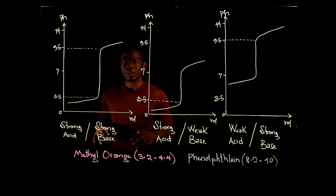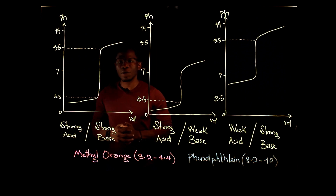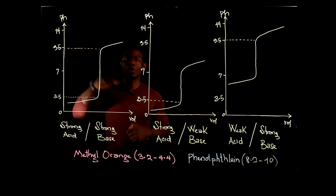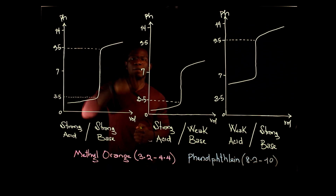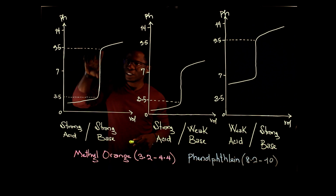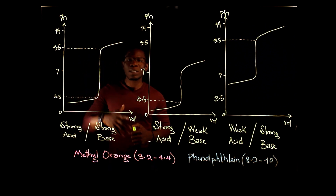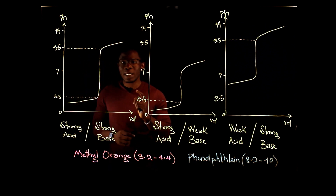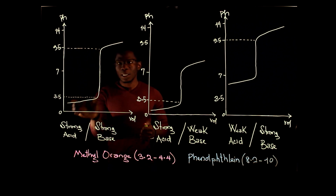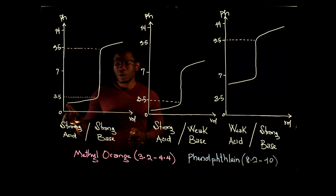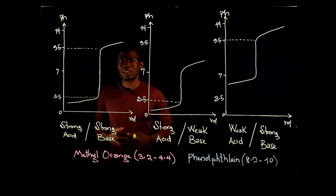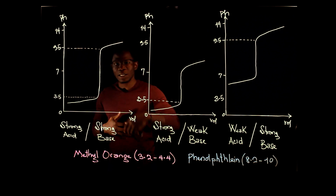At this point the titration finishes and there is a sharp rise in pH value. If you continue to add more base, the solution becomes very basic. This vertical line indicates when the titration actually ends. Our indicators will only work across this vertical line — not in the regions before or after it, only within this particular range.